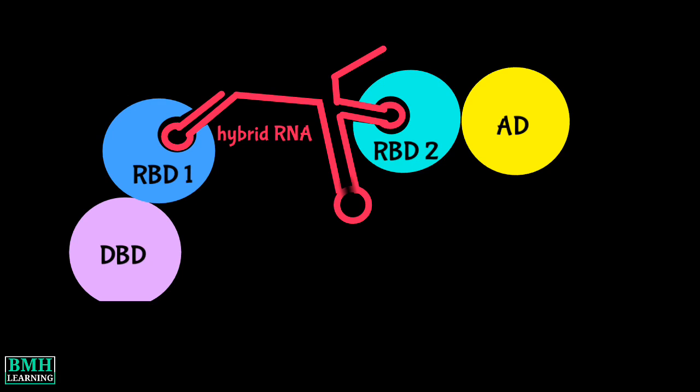The third hybrid part is an RNA molecule which bridges the two fusion proteins by providing two specific RNA targets for the RNA binding proteins.